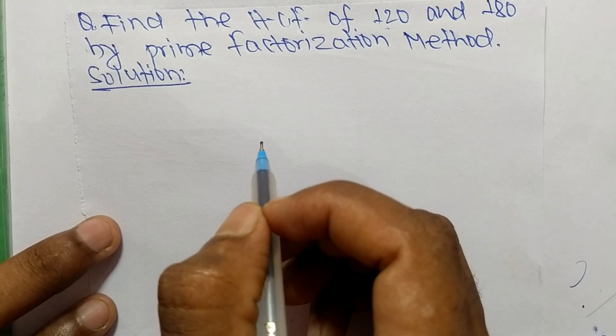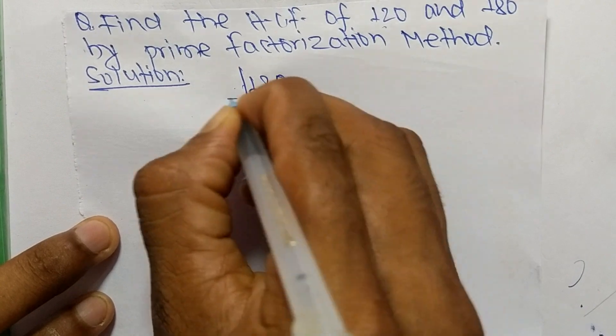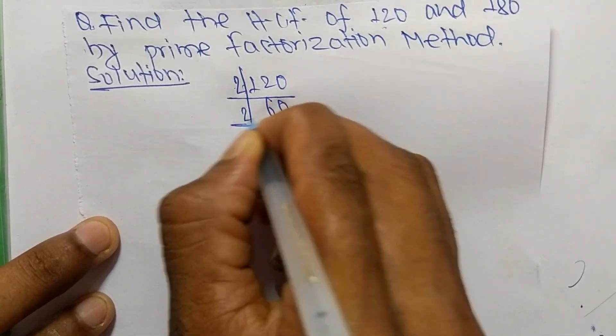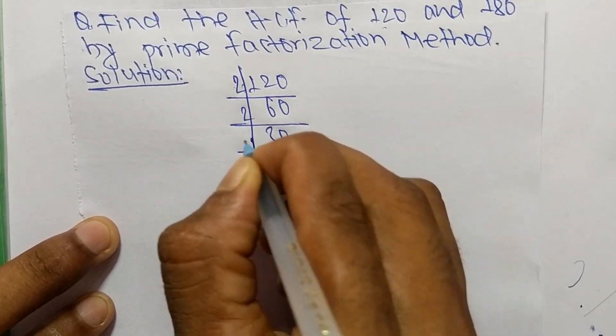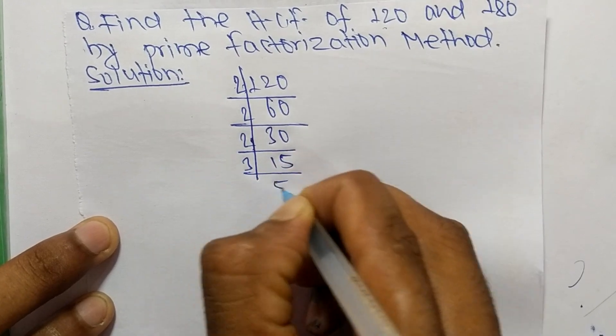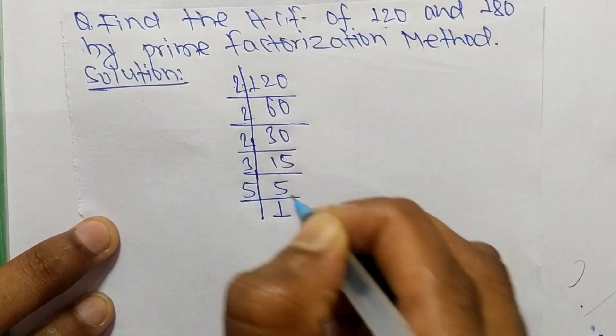First, we find out the prime factors of 120. So it is 2 times 60 equals 120, 2 times 30 equals 60, 2 times 15 equals 30, 3 times 5 equals 15, and 5 times 1 equals 5.